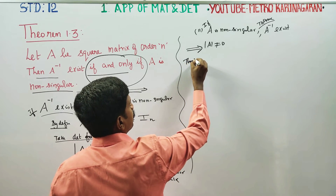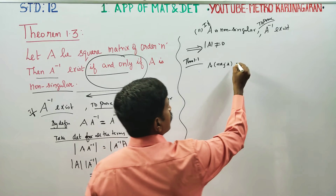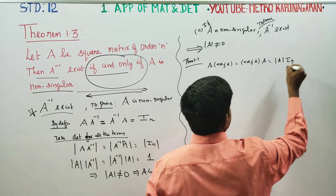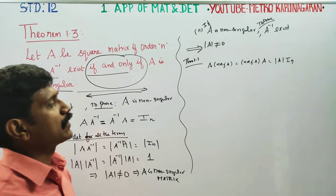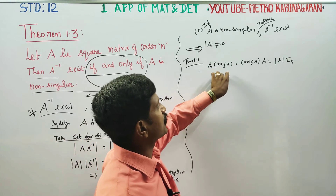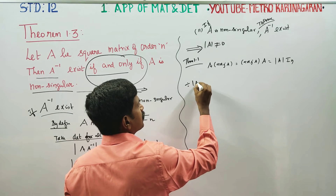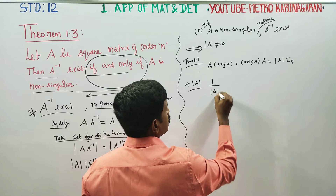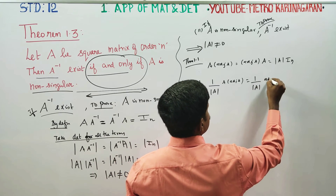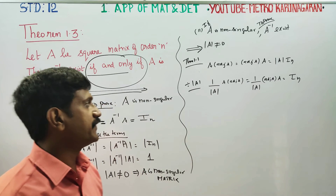From theorem 1.1, we know that A into adjoint(A) equals adjoint(A) into A equals determinant(A) into I_n. This is the formula for theorem 1.1. So adjoint(A) into A equals determinant(A) into I_n. Since determinant(A) is not equal to 0, you can divide all terms by determinant(A).